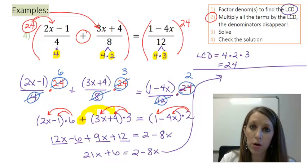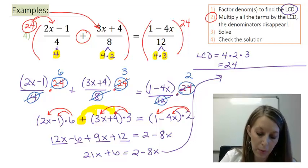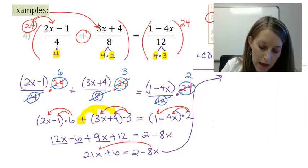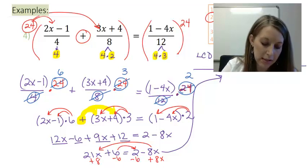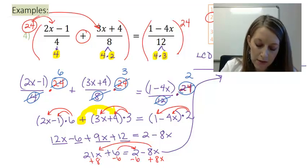So now I'm going to start rearranging them by doing opposite operations. Let me move my x's to the left by adding 8x from both sides. And my constants to the right by subtracting 6 from both sides. On the left, that leaves me with 29x. And on the right, 2 minus 6 leaves me with a negative 4.